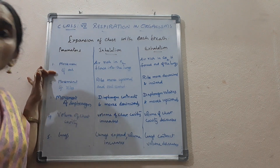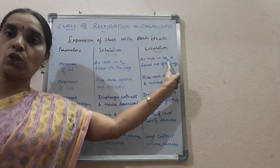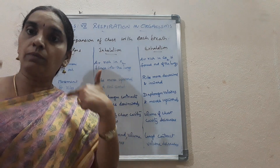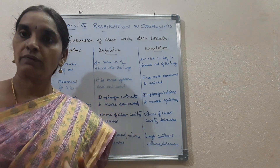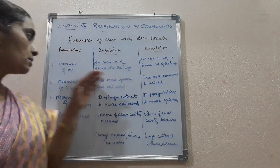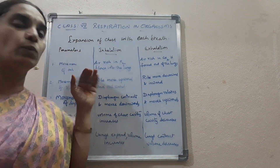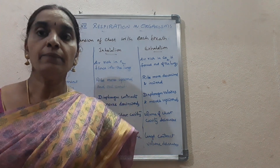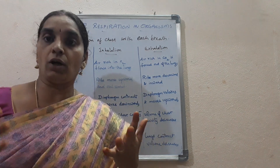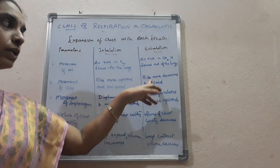The first parameter is the movement of air: air rich in oxygen flows into the lungs during inhalation, and air rich in carbon dioxide is forced out of the lungs during exhalation. The second parameter is the movement of ribs. The ribs move upward or outward during inhalation. During exhalation, they move downward or inward.